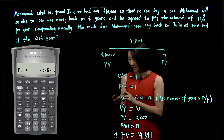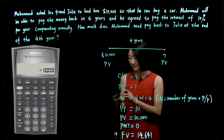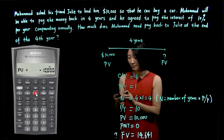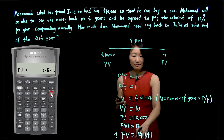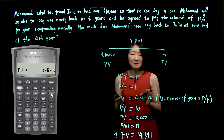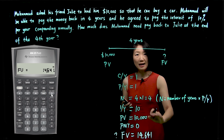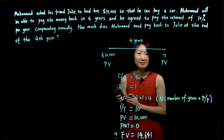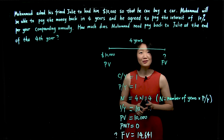But if you think from Julie's perspective, Julie would lose $10,000 and gain $14,641. Let's try that: if we change present value to negative and compute future value, you will see a positive $14,641. It doesn't matter which perspective you use — just keep in mind that PV and FV have to be opposite signs when you use the calculator. Now we have solved the problem. Thank you for watching.